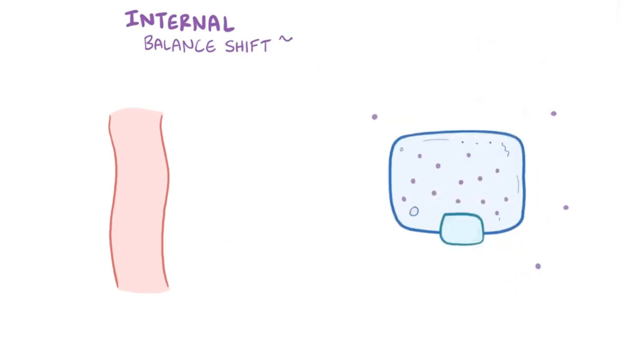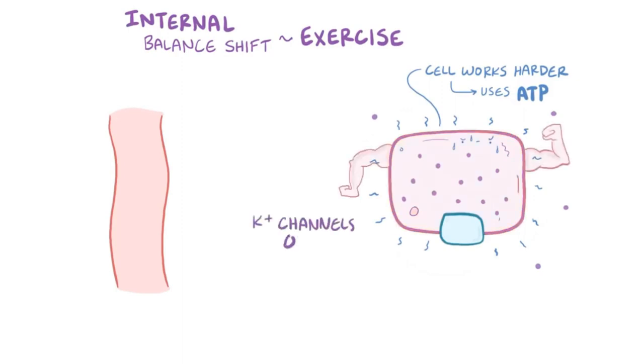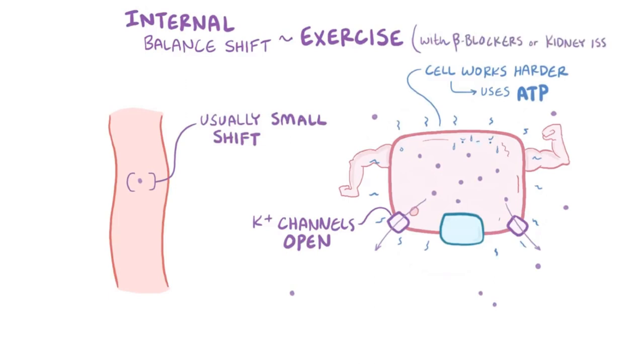A final example of internal potassium balance leading to hyperkalemia is exercise. During exercise, while the body and the body's cells are working harder, more cellular ATP, which is the molecular unit of currency, gets consumed. The depletion of ATP triggers potassium channels on the membrane of muscle cells to open up, which allows potassium to move down its electrochemical gradient and out of the cell. Usually this shift is small, but if combined with beta blockers or kidney issues, strenuous exercise can lead to hyperkalemia.